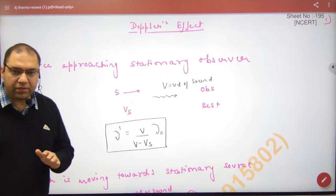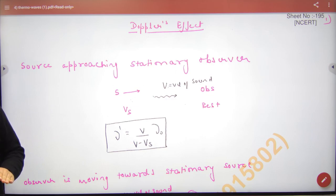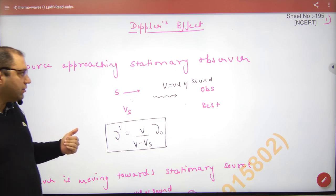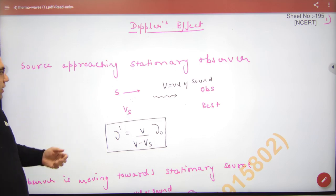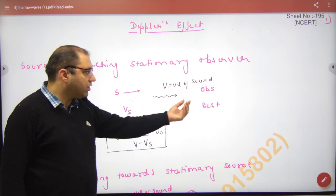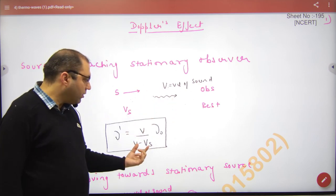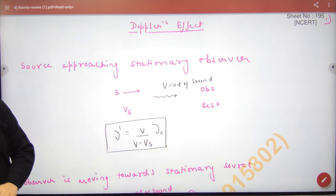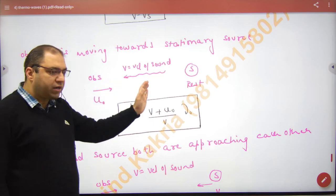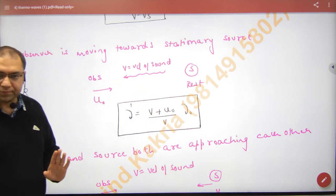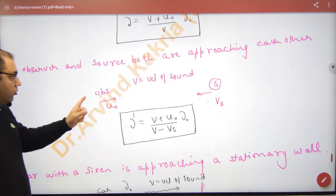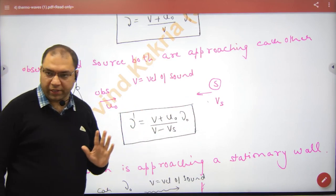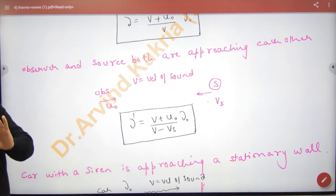In this Doppler effect revision, I have written some examples with a revision of formulas. The first formula: if the source is moving and the observer is at rest, then the formula is v upon v minus vs into new not. If the observer is moving toward the source, this is the formula. If both are moving, we have done this formula. These formulas we have done last time.